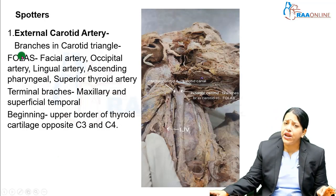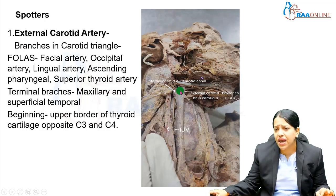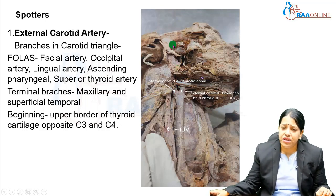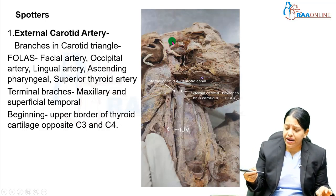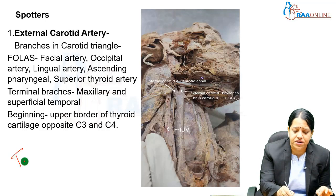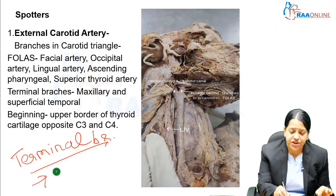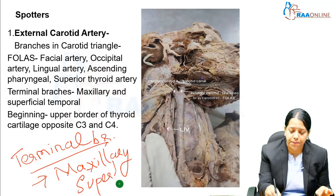Another important question can be the terminal branches. The external carotid artery starts in the neck, crosses the carotid triangle, and enters the parotid gland. Within the parotid gland it gives the superficial temporal artery and the maxillary artery — these are its terminal branches.